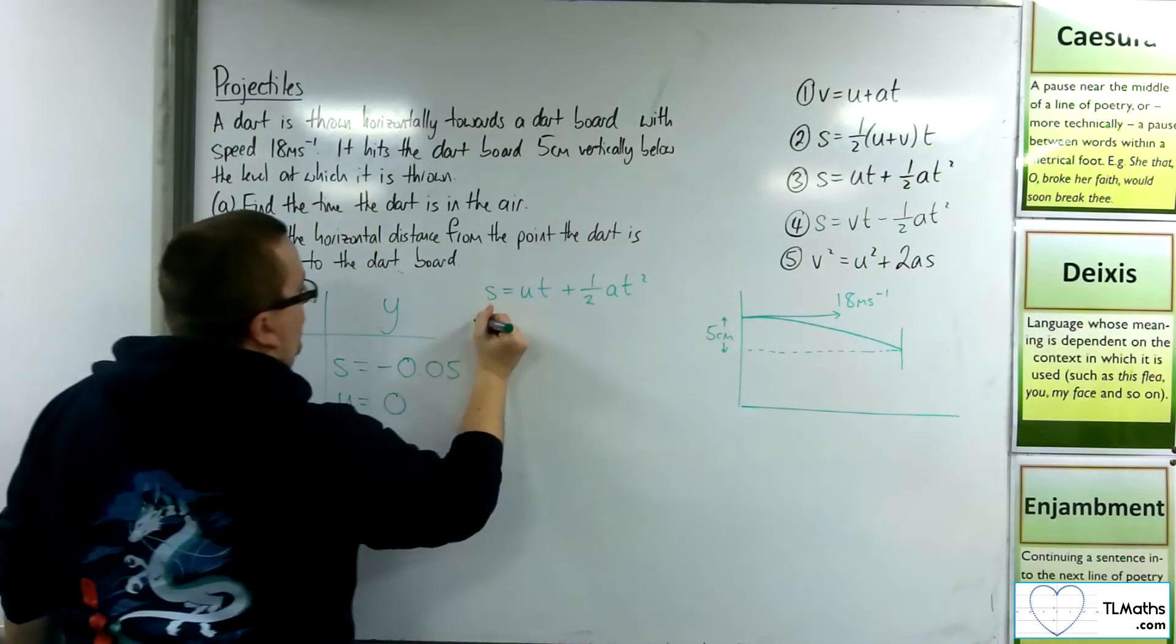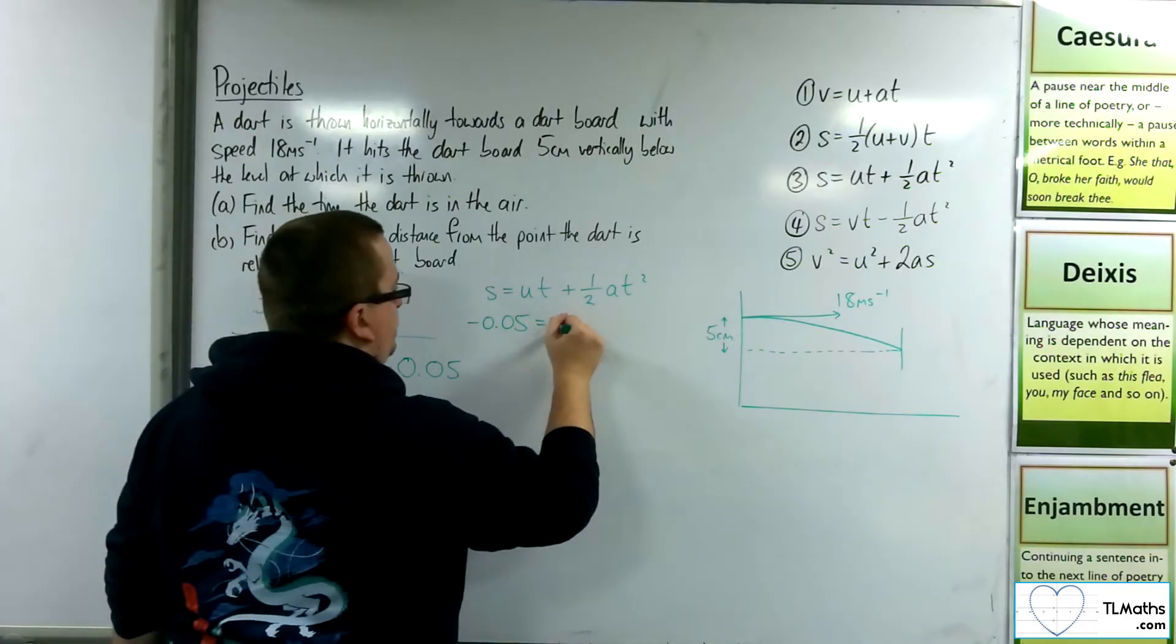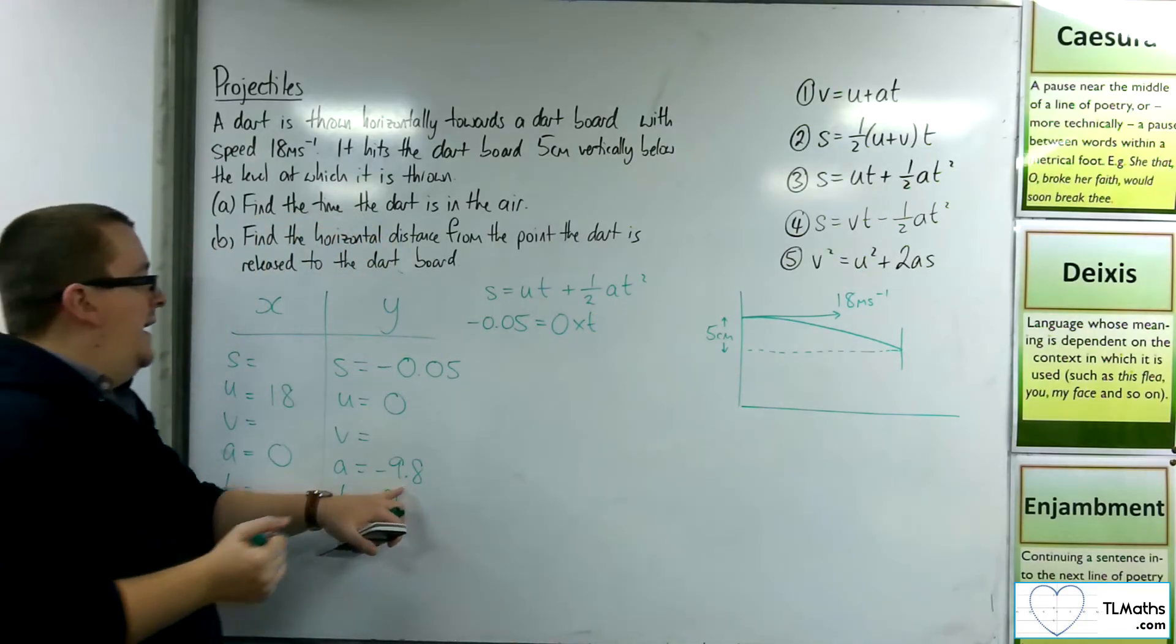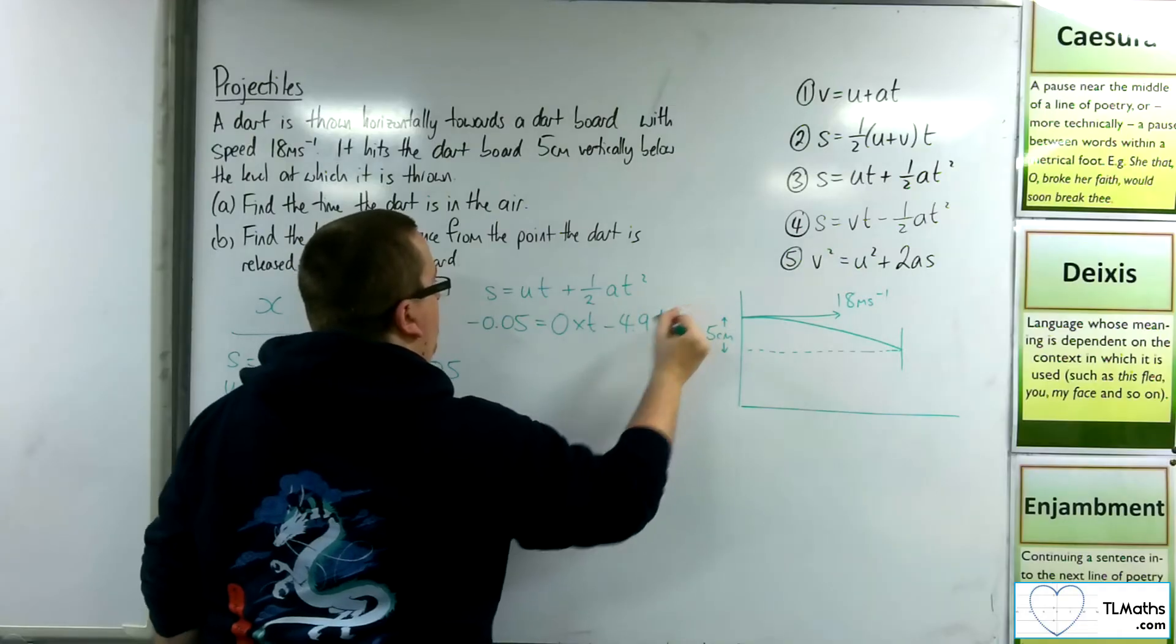So the s we know is minus 0.05. The u is 0, and we've got a half times a, so minus 4.9 t squared.